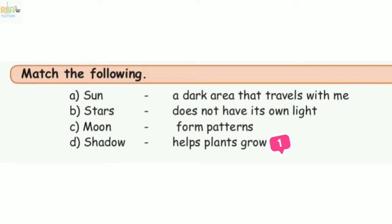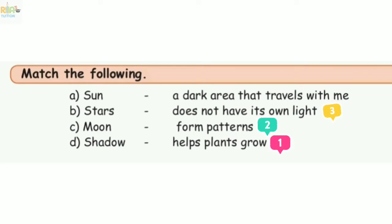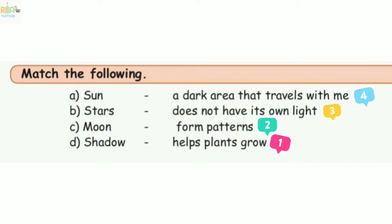Next, we will match the stars — stars form patterns. Then we match the moon — the moon does not have its own light; it reflects light from the sun. Last, shadow — a shadow is a dark area that travels with me.